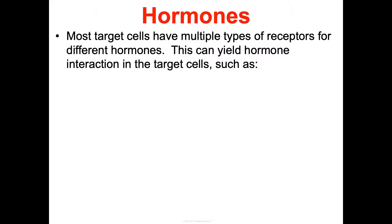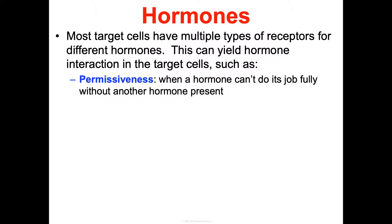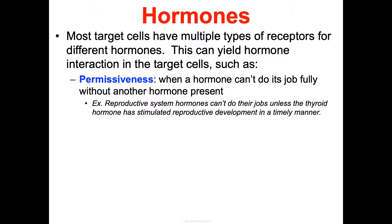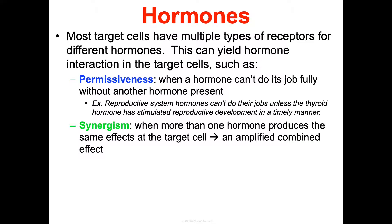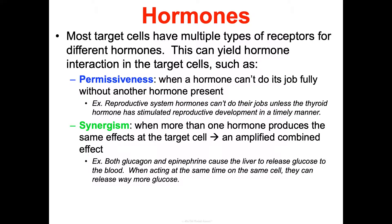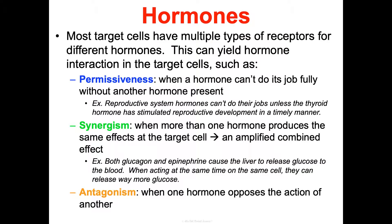Most target cells have multiple receptor types for different hormones, yielding hormone interactions. Permissiveness is when a hormone can't do its job fully without another hormone present — reproductive hormones can't function unless thyroid hormone has stimulated reproductive development. Synergism is when more than one hormone produces the same effect on a target cell, creating an amplified combined effect. Antagonism is when one hormone opposes the action of another — the simplest example is insulin lowering blood glucose while glucagon raises it.